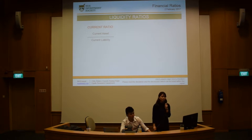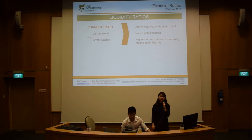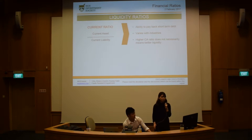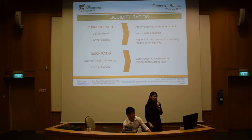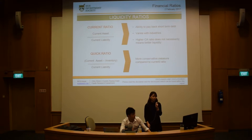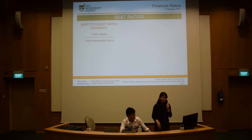Now we move on to liquidity ratios. The first is the current ratio, which is current assets over current liabilities. It shows the company's ability to pay back short-term debt, varies with the industry, and a higher current ratio does not necessarily mean better liquidity. The quick ratio is current assets minus inventory over current liabilities — a more conservative measure compared to the current ratio because it removes inventory from current assets.